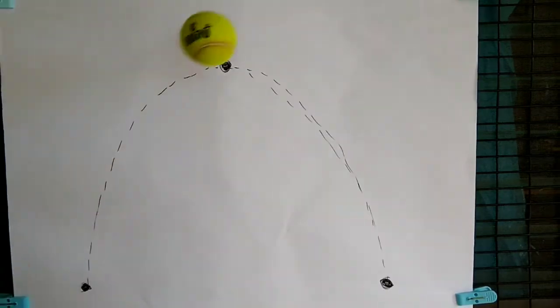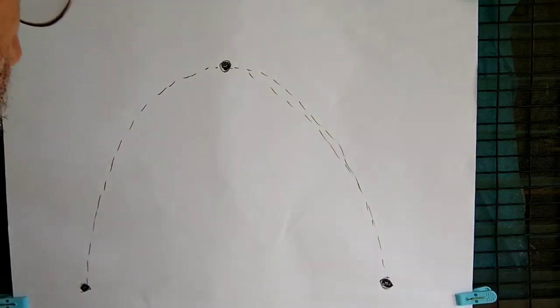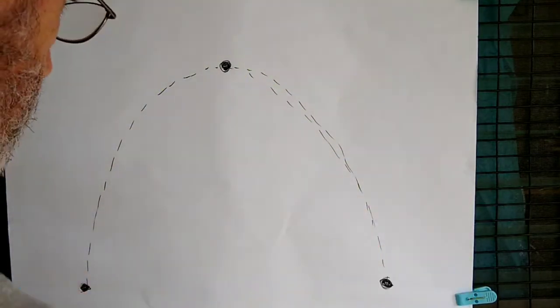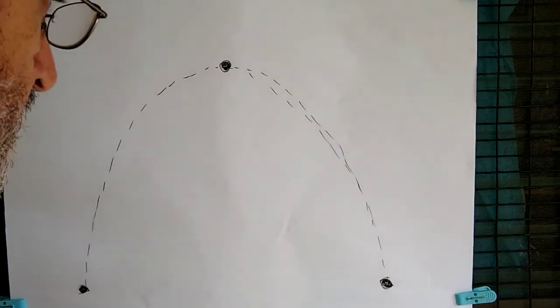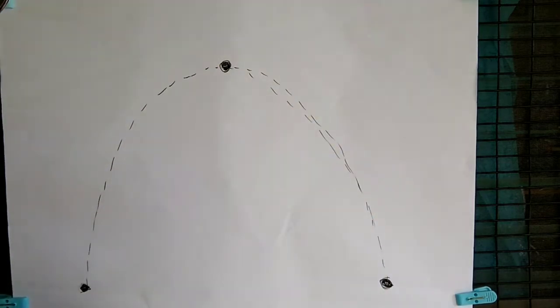Today we're going to look at the arc of a ball. Take a look at the path of the ball across that poster pad. This is a rough sketch of that path, not very precise, but you can see that the ball roughly follows that.